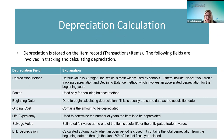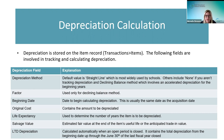The first field is the depreciation method on the item record. There's a section called 'Depreciation Information' with a default value of straight line, which is the most widely used by schools. The other options are 'none' if you don't want to track depreciation on the asset, and 'declining balance,' which is an accelerated method that depreciates more at the beginning of the asset's life and tapers off in later years.